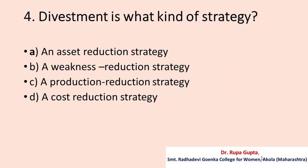Question number four: Divestment is what kind of strategy? Option A: an asset reduction strategy. B: a weakness reduction strategy. C: a production reduction strategy. D: a cost reduction strategy. The correct answer is A, i.e., an asset reduction strategy.